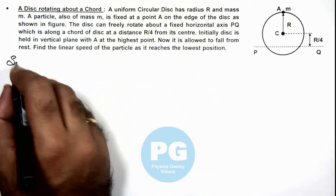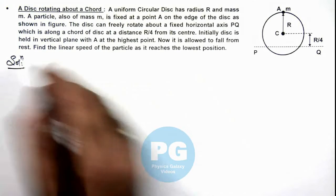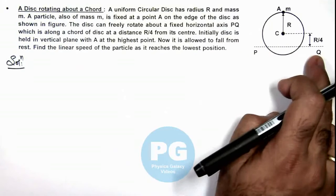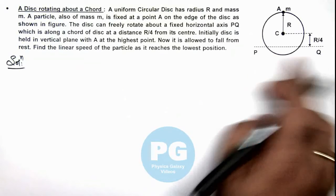Now, in this situation here we can write: when the disc reaches the lowest position, it'll rotate by 180 degrees with respect to the axis PQ.